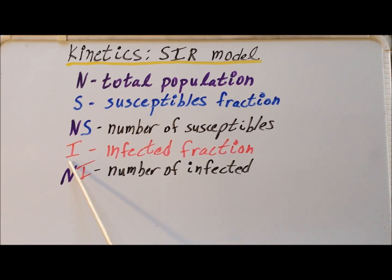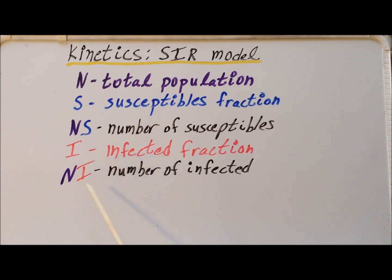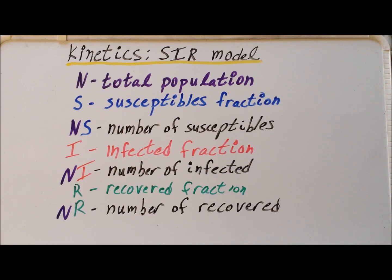The variable capital I is the fraction of the population that is currently infected with the disease. Therefore, N times I gives us the total number of infected individuals. The variable R gives us the fraction of the population that has become infected but then recovered from the infection. This recovery can include becoming well or perishing from the infection. The total number recovered we get by multiplying N times R.